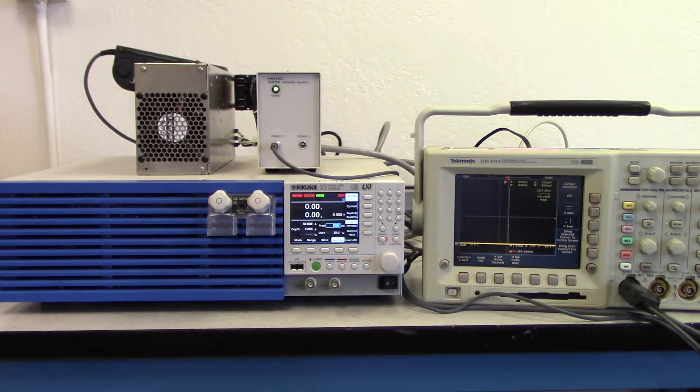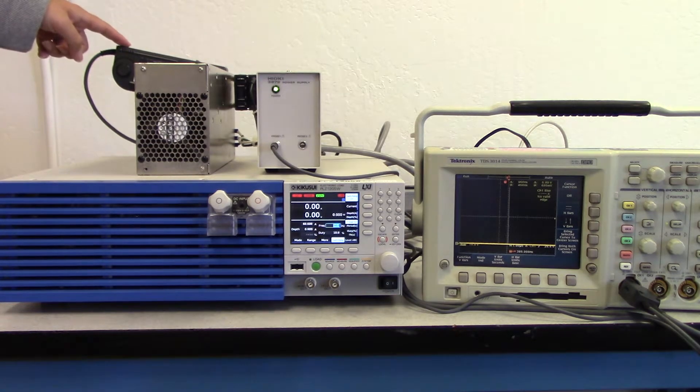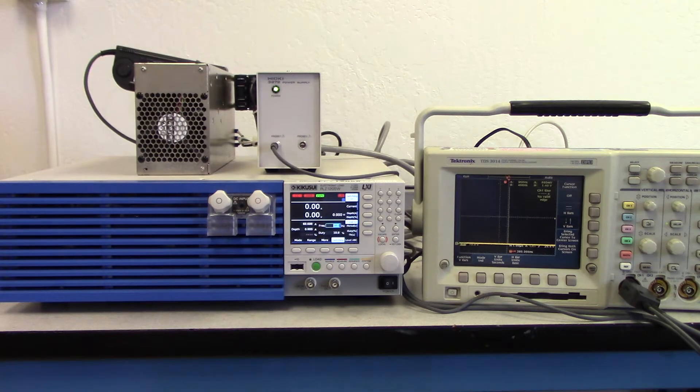To measure the current, we have this current probe attached to the positive terminal of the DC power supply, and we have that measurement displayed here on the scope.